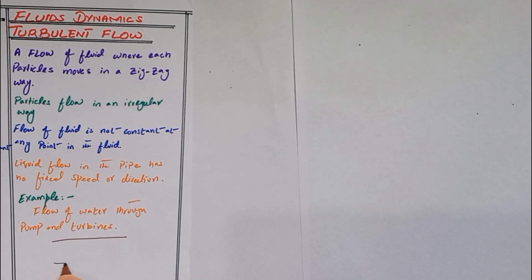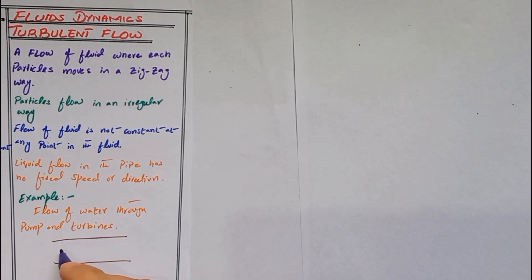If we talk about its flow, its path is irregular because it has not well-defined path. Every particle moves in irregular way. Thank you.